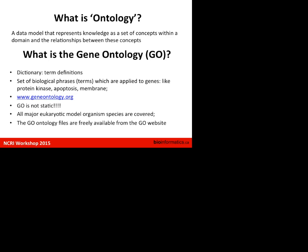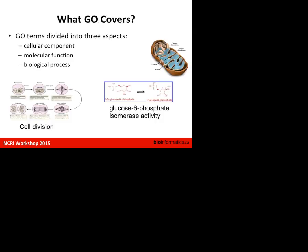The Gene Ontology Consortium is trying to do the same thing with biological terms and entities. It's a dictionary dealing with biological phrases like protein kinases, apoptosis, and membranes, and tries to establish connections between them. It's not static — it's constantly updated — and it covers not only the human genome but all kinds of genomes. The ambitious task is to synchronize terms across all genomes, and it's publicly available for free.